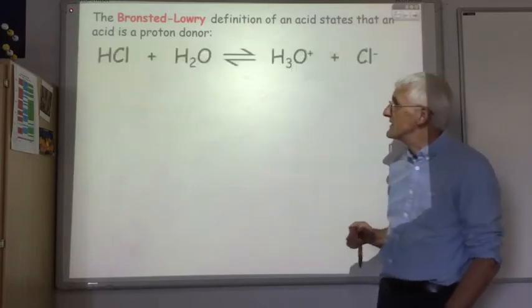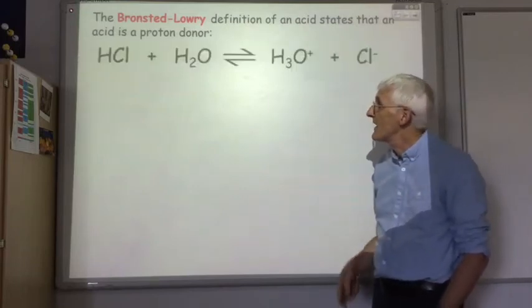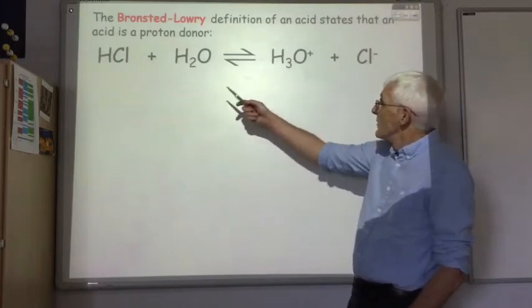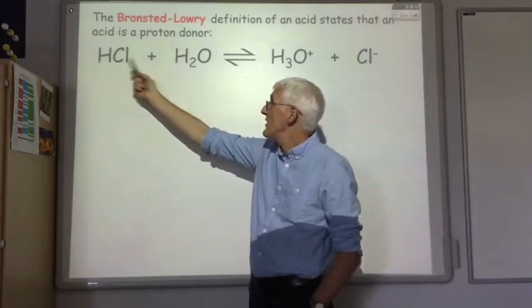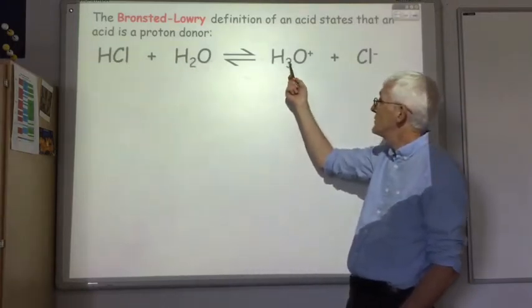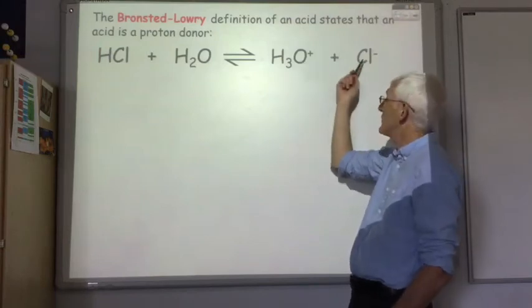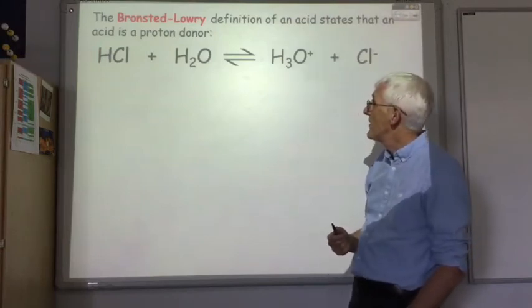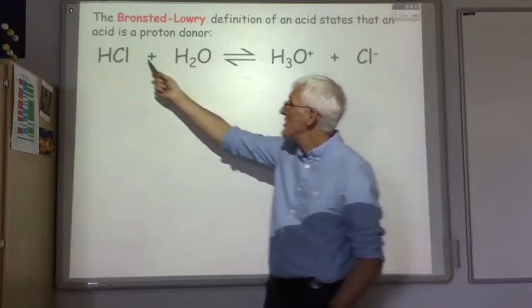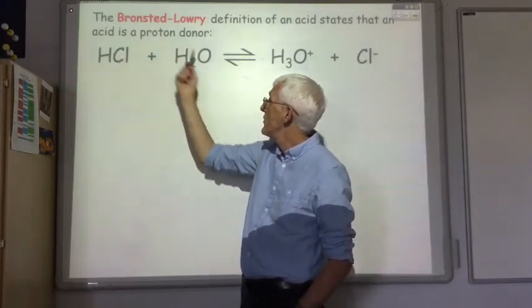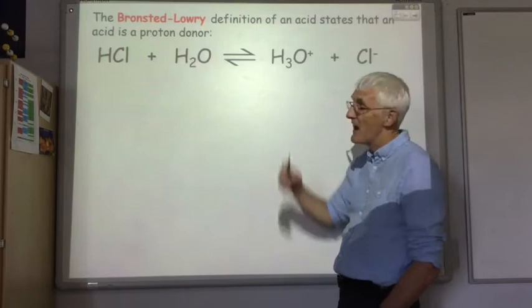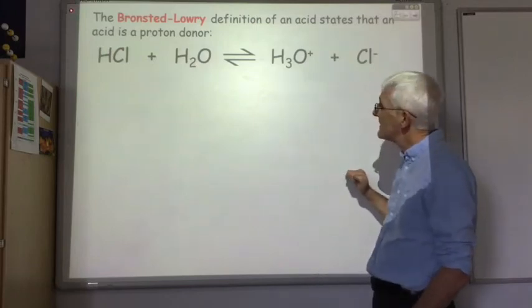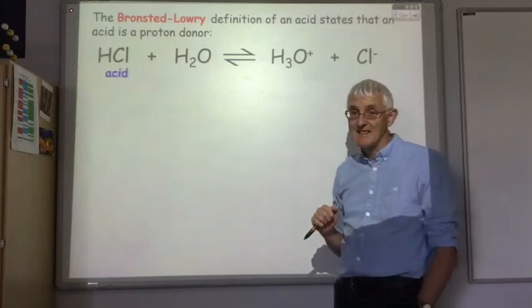Let's look at this example. We've got HCl and water, we produce our hydronium ion and the chloride ion. Now what's donating the proton? The HCl is donating the proton to the water to form the hydronium ion. That means the HCl is the acid.